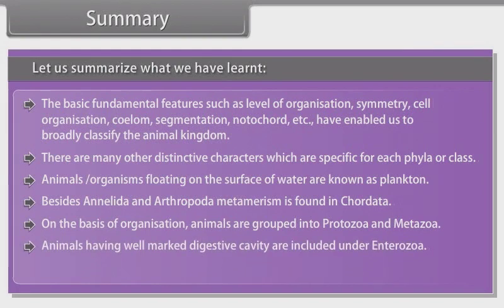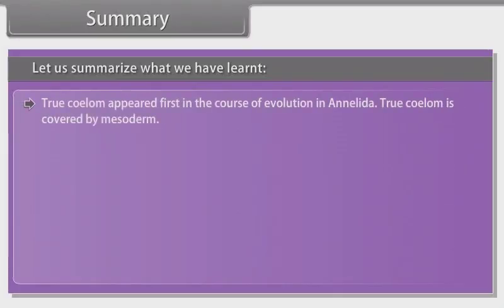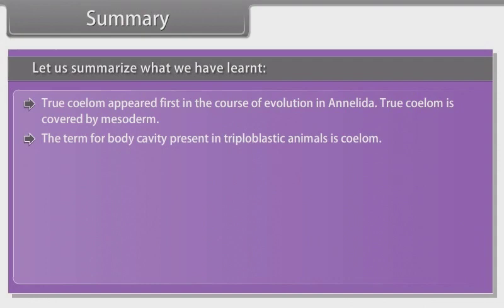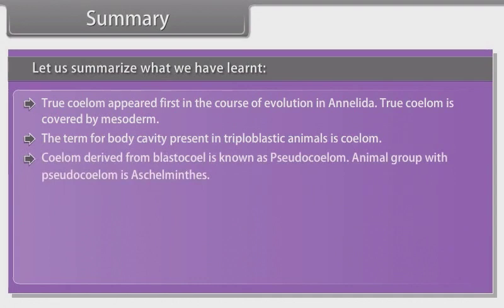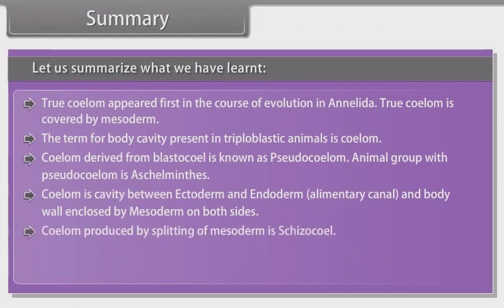A true coelom is absent in phylum Platyhelminthes and Nematoda. True coelom appeared first in the course of evolution in Annelida. True coelom is covered by mesoderm. The term for the body cavity present in triploblastic animals is coelom. Coelom derived from the blastocoel is known as pseudocoelom. Animal group with pseudocoelom is Aschelminthes. Coelom is the cavity between ectoderm and the alimentary canal, enclosed by mesoderm on both sides. Coelom produced by splitting of mesoderm is schizocoelom.